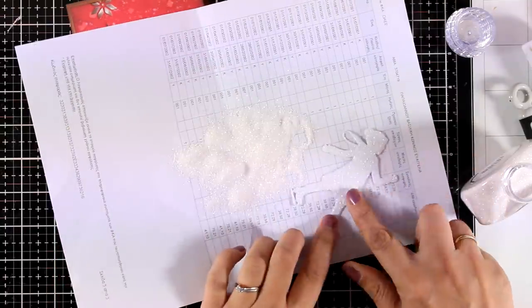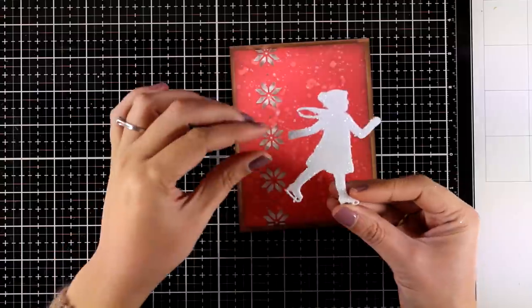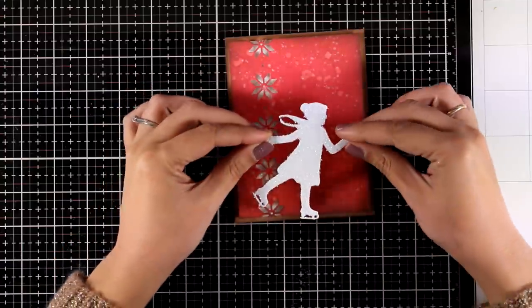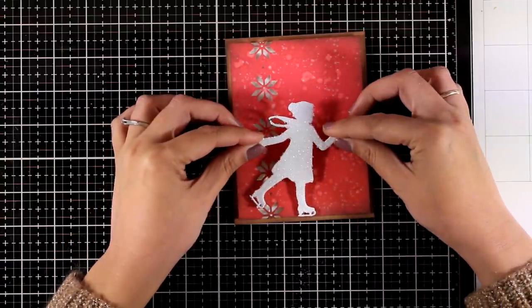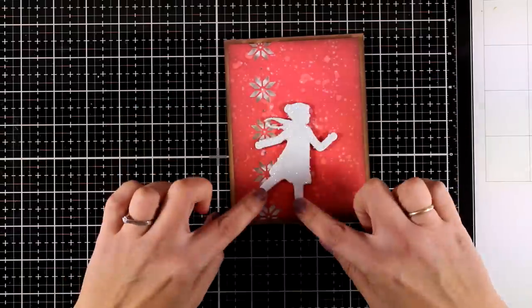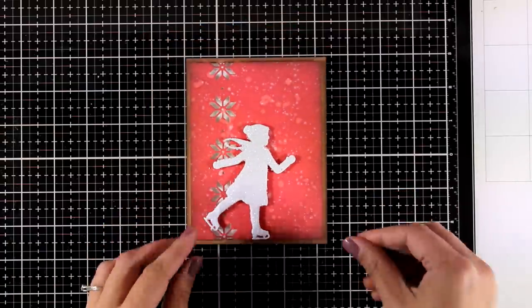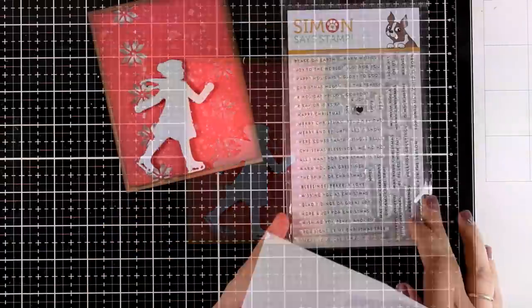I used foam tape at the back of my girl and I'm going to stick here on top of my background. I absolutely love this design and although I'm using it for a Christmas card it doesn't scream Christmas so you can easily use it for any winter card.